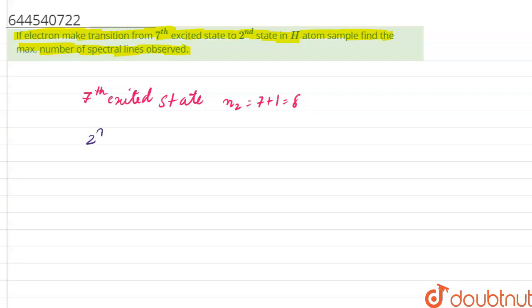And if we have been given 2nd excited state, this means N1 is equal to 2 plus 1, that is, basically N1 is equal to 3.